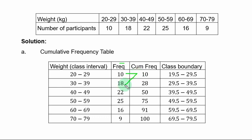To get the next, you add 10 to 18, you get 28. 28 plus 22, you have 50. 50 plus 25, 75. 75 plus 16, you have 91. 91 plus 9, you have 100.